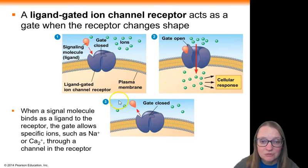If you want the gate to close, then the ligand or the signaling molecule has to hop off. Once it hops off the receptor, then that gate will close, and no more of those ions are allowed to pass across.